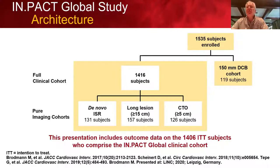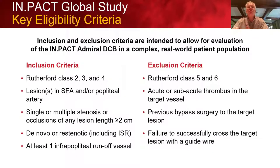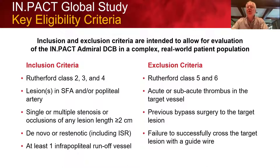These were complex lesions with bilateral disease, multiple lesions, lesions involving both the SFA and popliteal artery, across TASC A to D. They had early critical limb ischemia in Rutherford class 2 through 4, de novo and in-stent restenosis, long lesions, and CTOs. Key inclusion criteria included Rutherford class 2, 3, and 4; lesions in the SFA or popliteal artery greater than 2 centimeters; de novo or restenotic lesions including in-stent restenosis; and at least one vessel runoff. Exclusions included Rutherford class 5 and 6, acute or subacute thrombus, previous bypass surgery to the target lesion, or failure to cross the target lesion with a guidewire.